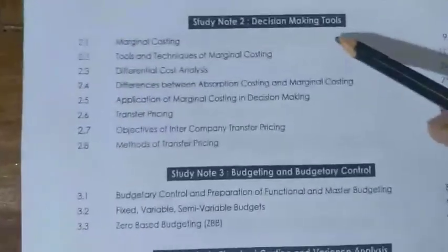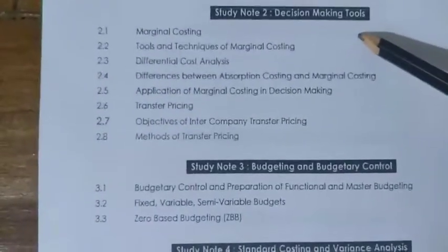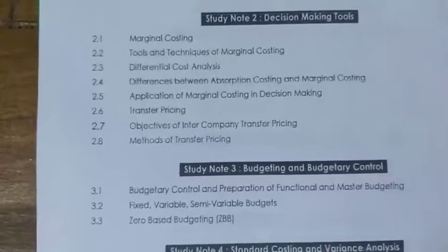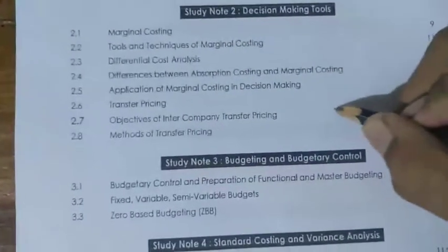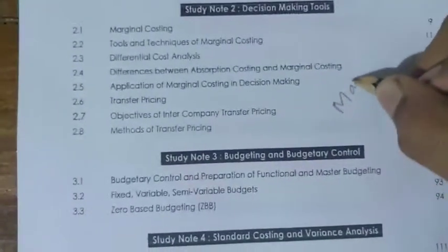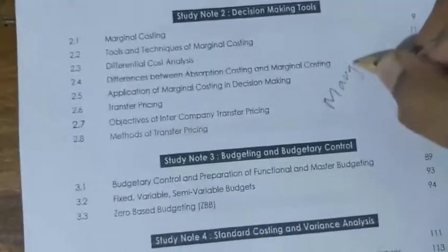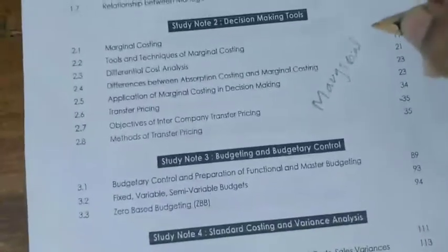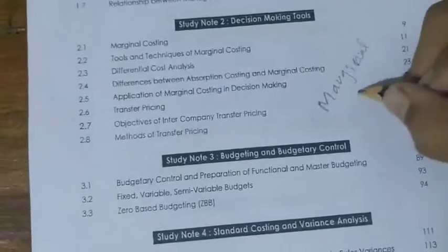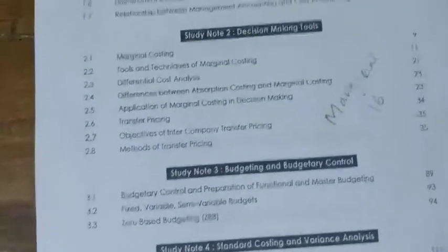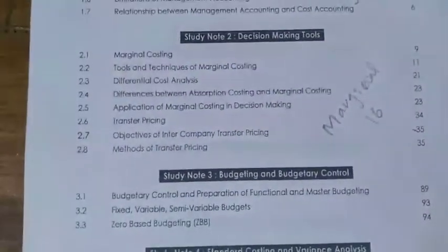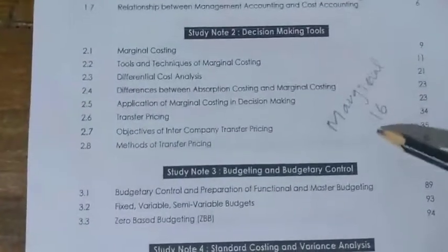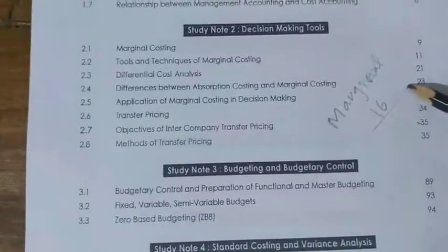The second chapter is Decision Making Tools, that is Marginal Costing. In this Marginal Costing chapter, we have to complete questions for 16 marks in the exam.